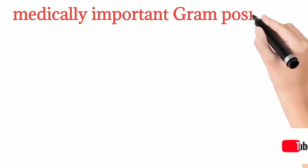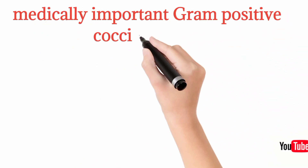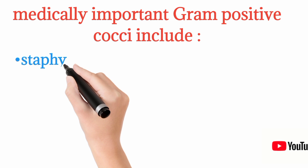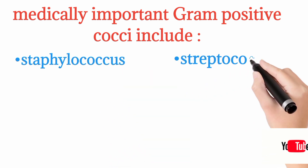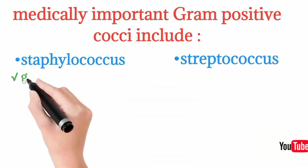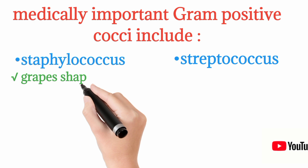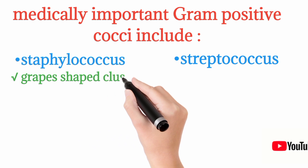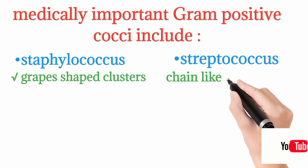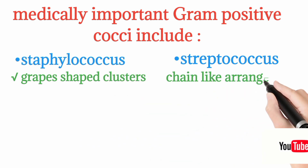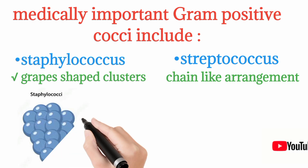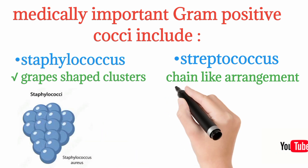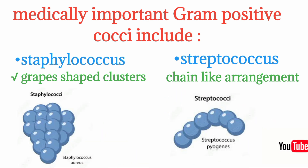Medically important gram-positive cocci include Staphylococcus species and Streptococcus species. Staphylococcus has a grape-shaped cluster arrangement, while Streptococcus has a chain-like arrangement.